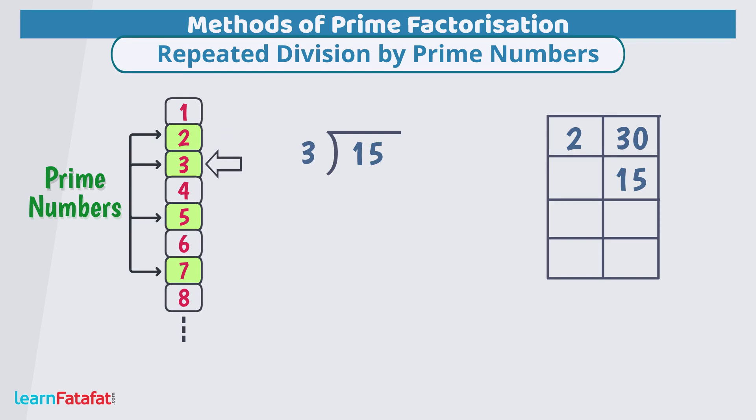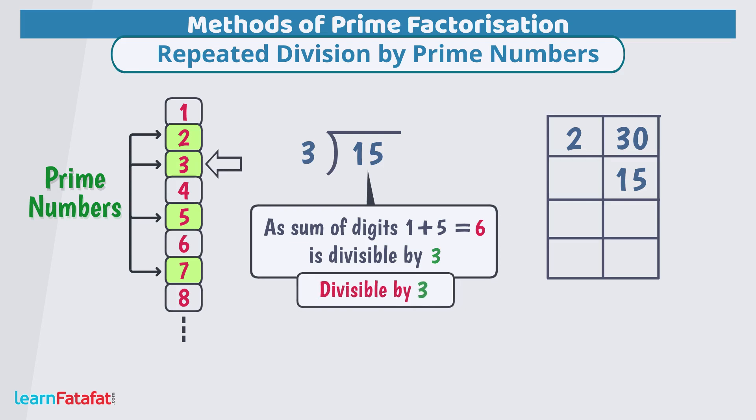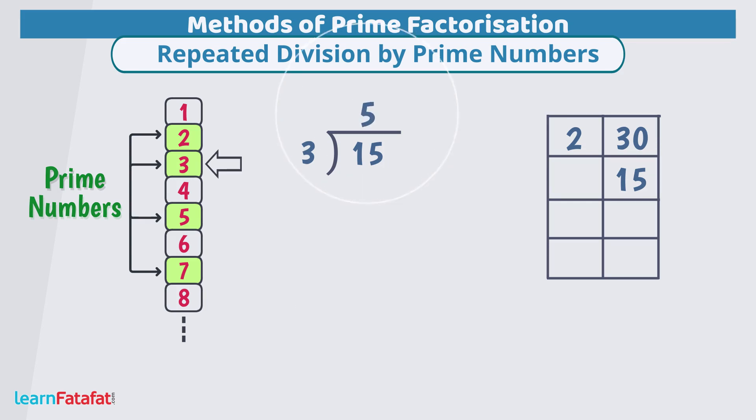According to test for divisibility, sum of digits is divisible by 3. So, this number must be divisible by 3. So, let's divide it. Quotient is 5.